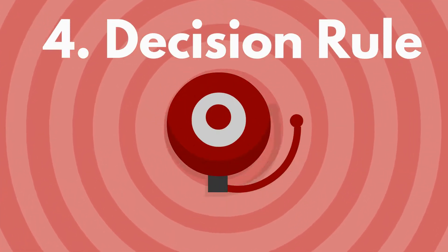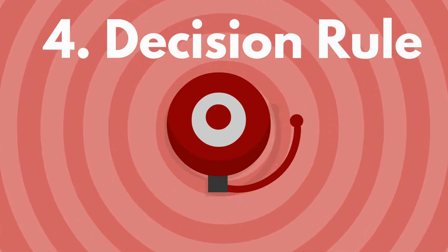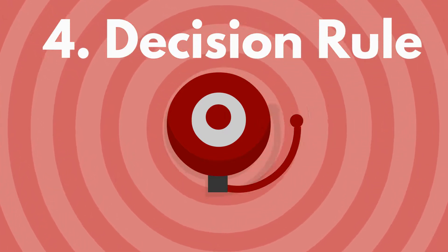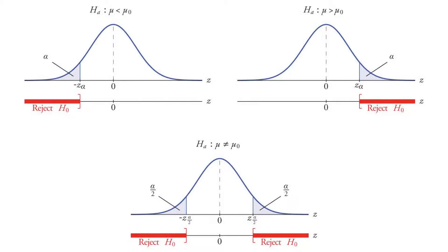The fourth step in hypothesis testing is stating the decision rule. When we test the null hypothesis, if we find that the calculated value of the test statistic is as extreme or more extreme than a given value determined by the specified level of significance or alpha, we reject the null hypothesis and say that the result is statistically significant. Otherwise, we do not reject the null hypothesis and say that the result is not statistically significant. The values with which we compare the calculated test statistic to make our decision are rejection points or critical values for the test.